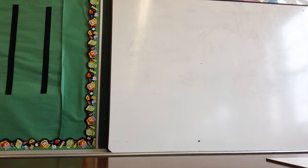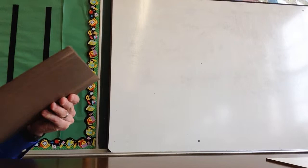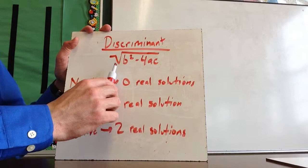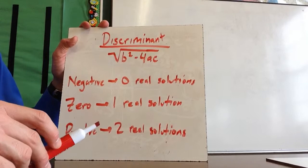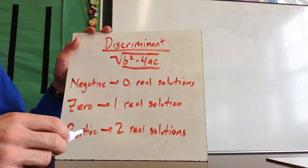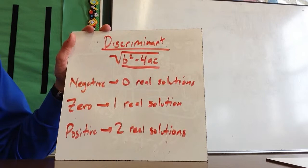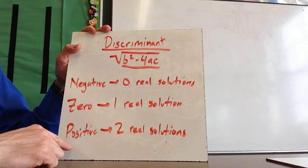The last thing to discuss is the discriminant — that's b squared minus 4ac, which is the expression inside the radical. If the discriminant is negative, there are zero real solutions, because you can't take the square root of a negative number. If it equals zero, there is one real solution. If it is positive, there are two real solutions.